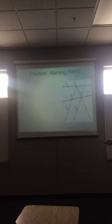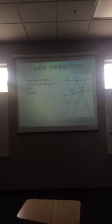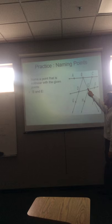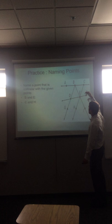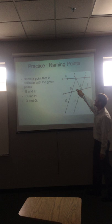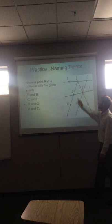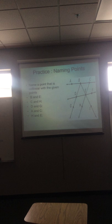So if I want to name a point that is collinear with the given points B and E, we could also say I is collinear with it. If we go C and H, then we go point E. If we go D and G, B would be collinear with it. A and C, B would be collinear with it.